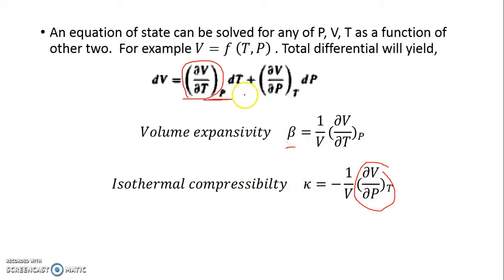This is β, this is κ, and when we substitute them, the equation becomes dV/V equals β dT minus κ dP. This is the equation where volume is related to pressure and temperature. If pressure and temperature change, you can see how volume changes.